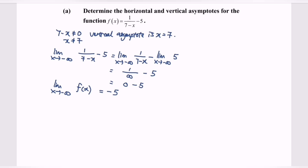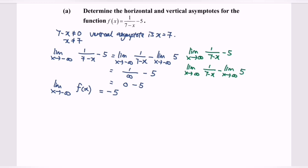Next, the limit when x is approaching positive infinity for the function 1 over (7 minus x) minus 5. We can split the situation: the limit when x approaches positive infinity for 1 over (7 minus x), minus the limit when x approaches positive infinity for 5. When we substitute the value infinity, we will obtain 1 over (7 minus infinity). As we know, 1 over infinity or 1 over negative infinity, we will obtain 0.